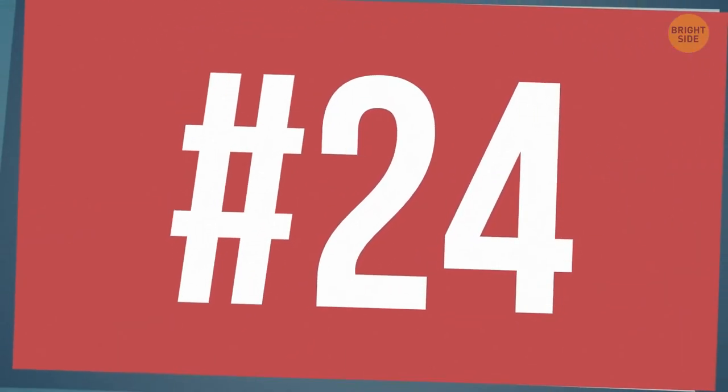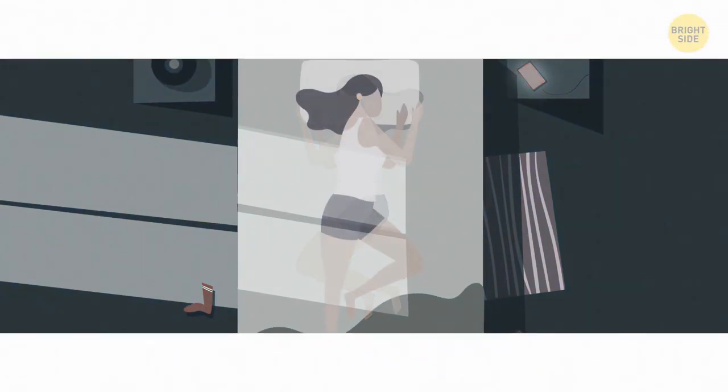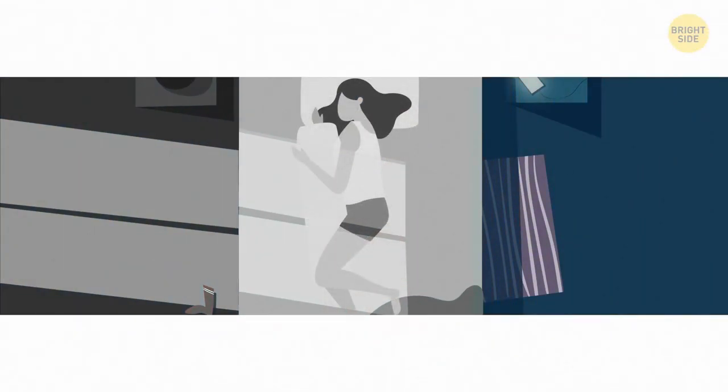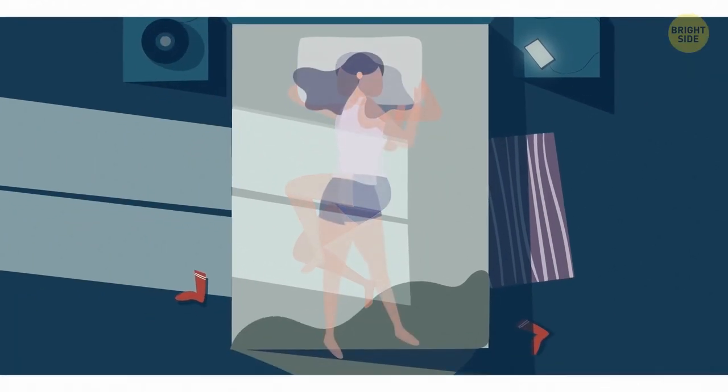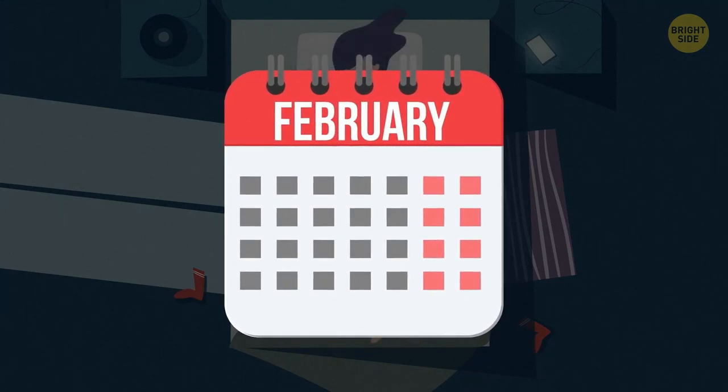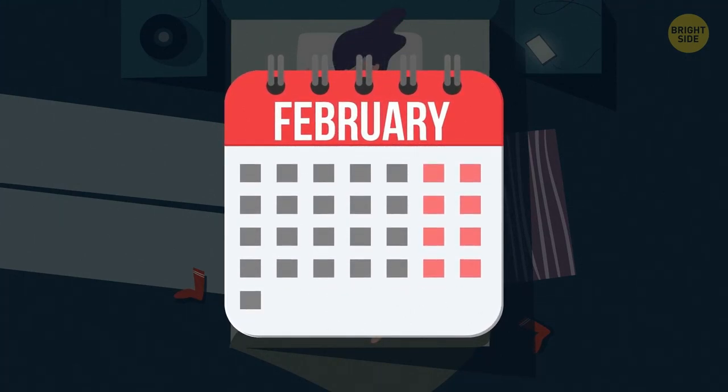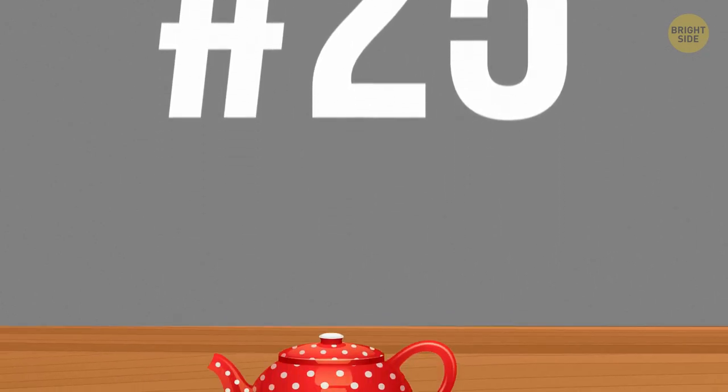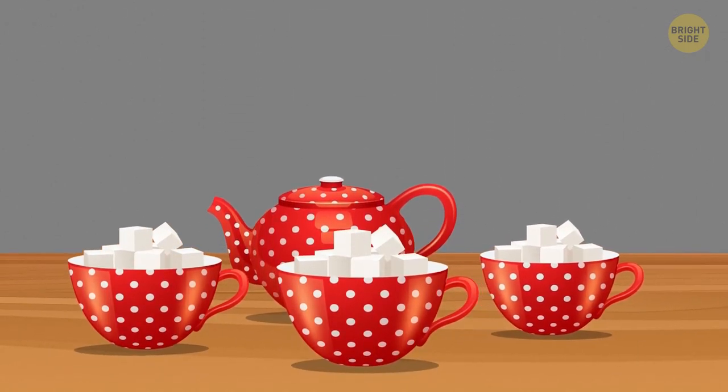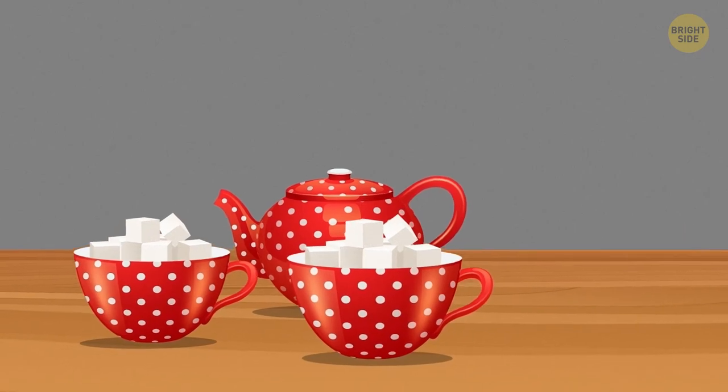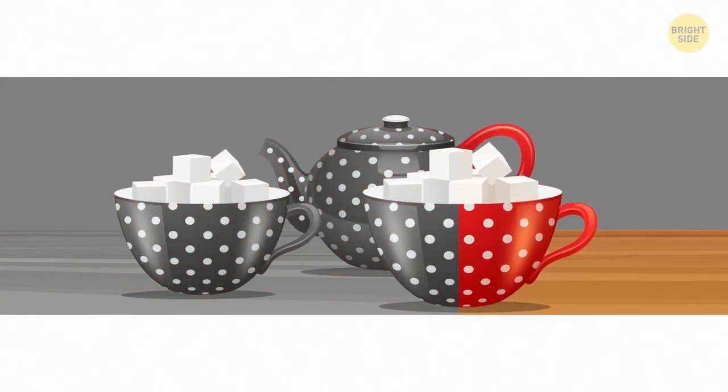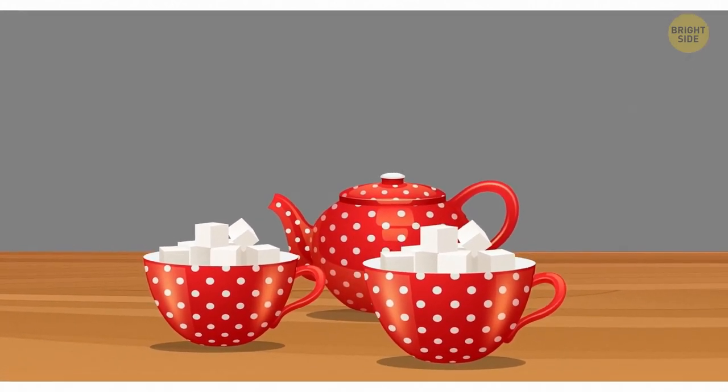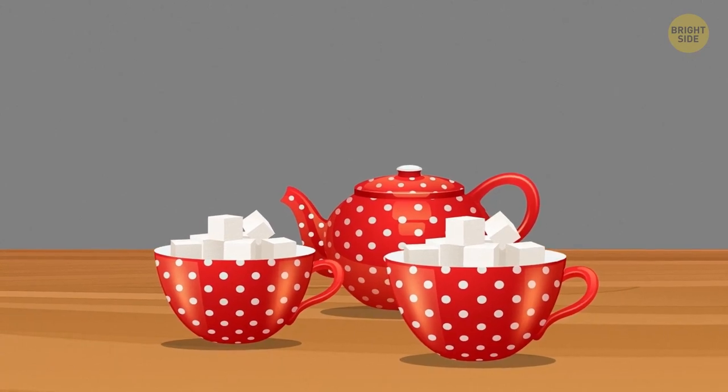24. During which month do people sleep the least? During February. It has only 28, maximum 29 days. 25. There are 3 cups of sugar on the table. You take one away. How many cups of sugar do you have? 1. The other two are still on the table.